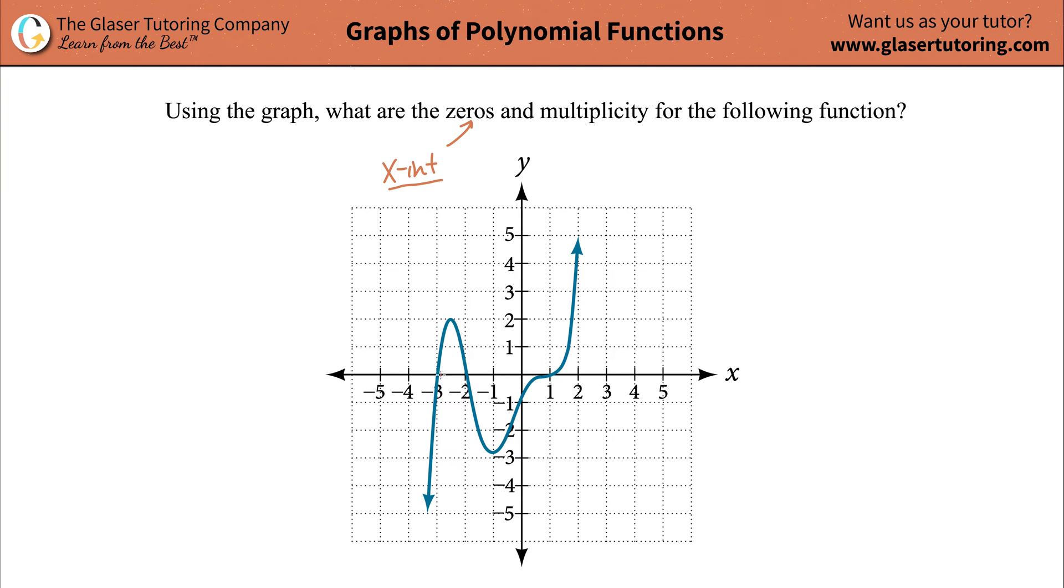So what is an x-intercept? Well, it's the values of x where the function intersects, crosses, or touches that x-axis. So if you notice, I have an x-value of negative 3 there, an x-value of negative 2 there, and an x-value of 1, all places where the function or the graph crosses that x-axis.